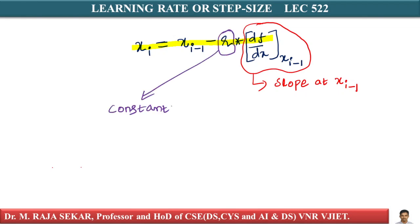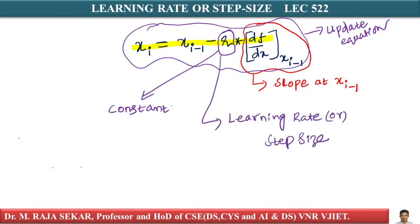In the previous lecture, we said that r is kept constant. This is often called the update equation for gradient descent. Now, r is often called learning rate and also called step size. Let's take an example and see what problem it could create if I keep my r as constant.